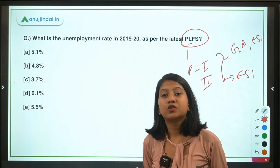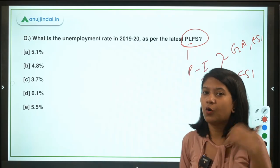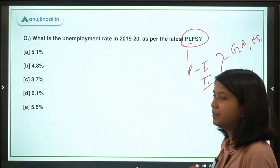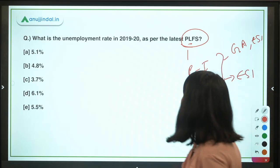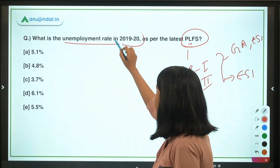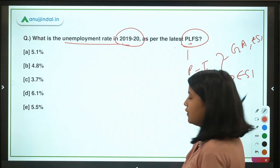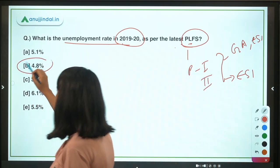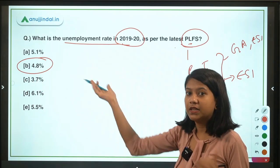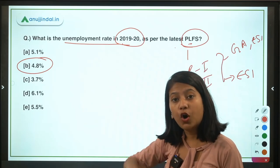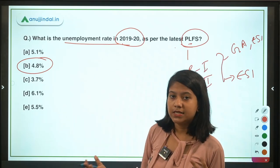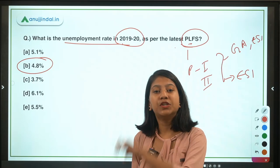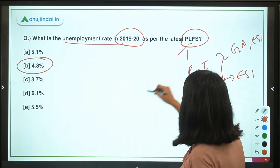The focus here is on phase one, so we don't need to go too complex — just be focused and attentive. So, what is the unemployment rate in 2019–20 as per the latest PLFS — Periodic Labour Force Survey? The unemployment rate was 4.8 percent. Now let's first know which organization releases the PLFS: it is released by the National Statistical Office under the Ministry of Statistics and Programme Implementation.